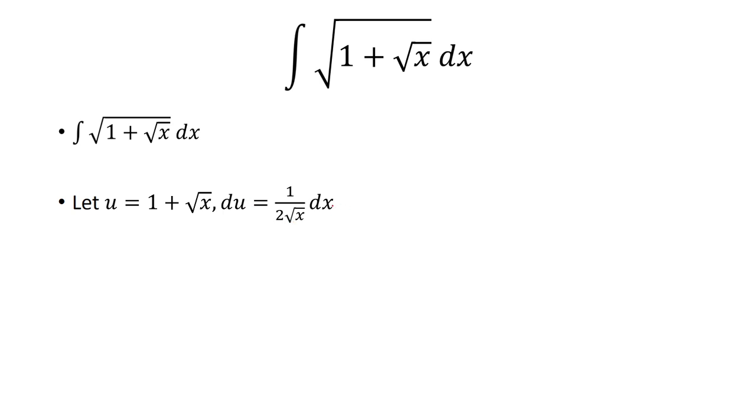Now we need to solve for dx. We're going to multiply both sides by 2 times the square root of x. We'll have 2 square root of x du is equal to dx.